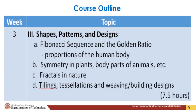The third topic covers shapes, patterns, and designs, including: A) Fibonacci sequence and the golden ratio; B) proportions of the human body and symmetry in plants and body parts of animals; C) fractals in nature; and D) tilings, tessellations, weaving, and building designs. Learning resources include online videos, natural environment books, online lecture notes, architectural and interior designs, and woven products. Assessment will be based on projects and assignments.